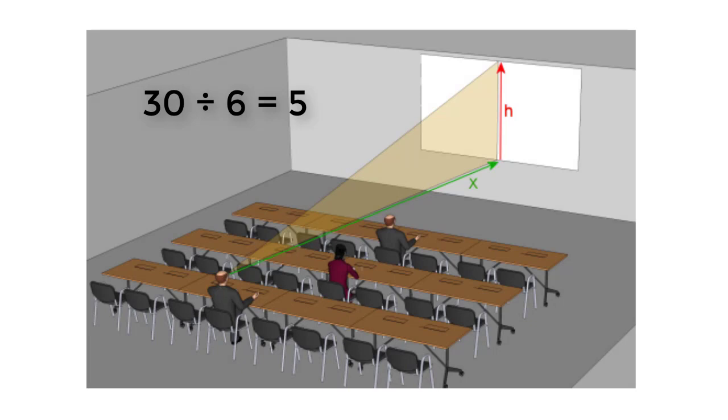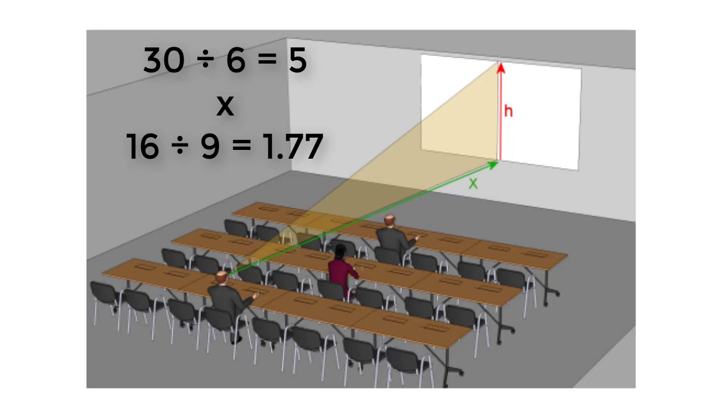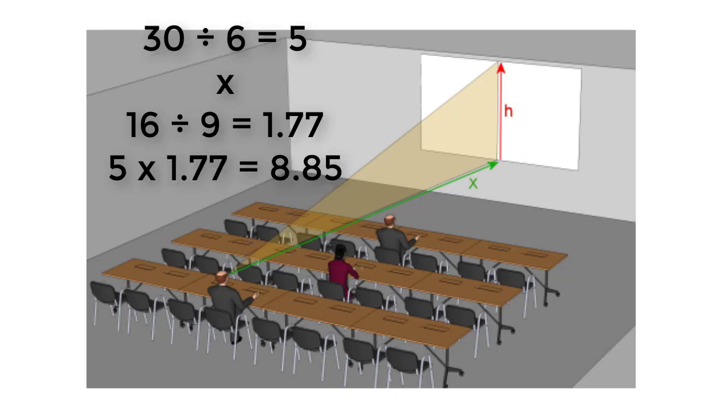We want a 16-9 aspect ratio, so we divide 16 by 9 to get our 1.77. Next, we multiply the height of 5 by 1.77 to get a screen width of 8.85 feet.